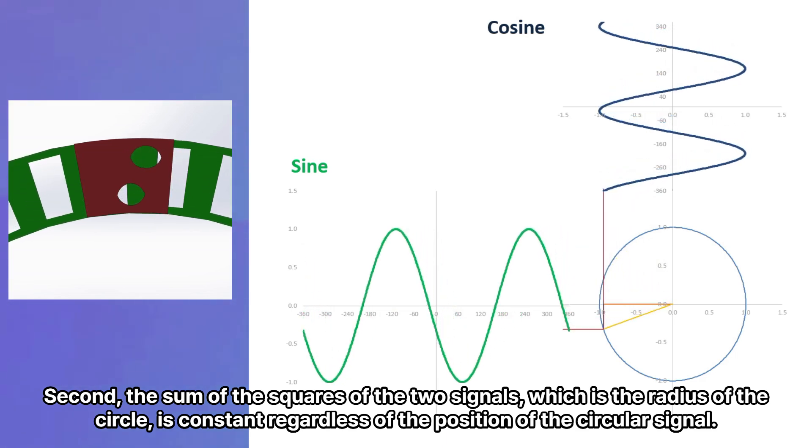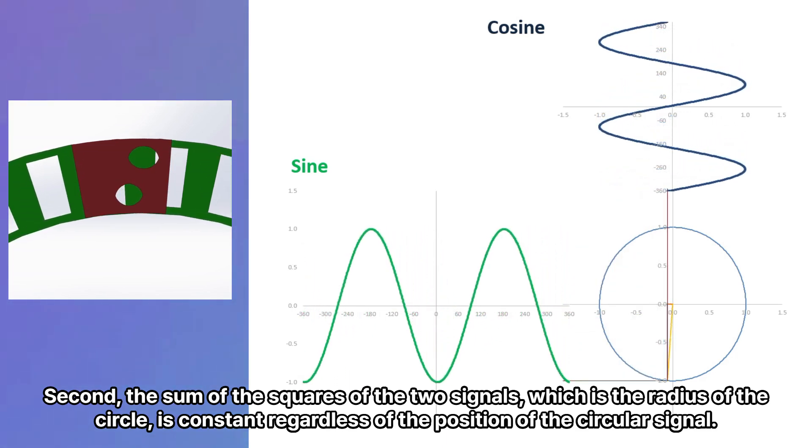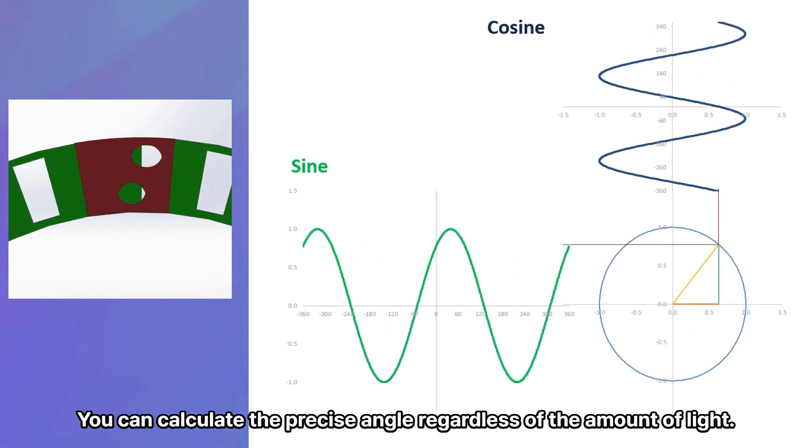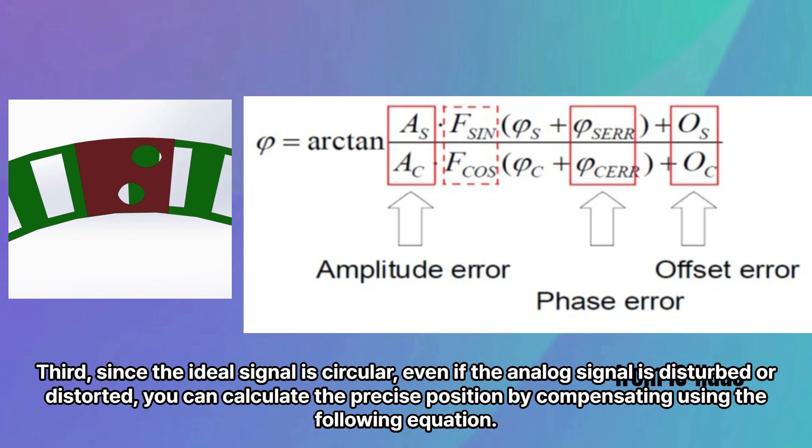Second, the sum of the squares of the two signals, which is the radius of the circle, is constant regardless of the position of the circular signal. You can calculate the precise angle regardless of the amount of light. Third, since the ideal signal is circular, even if the analog signal is disturbed or distorted, you can calculate the precise position by compensating using the following equation.